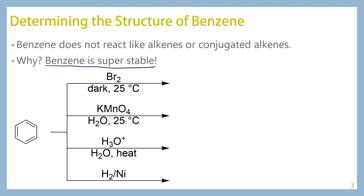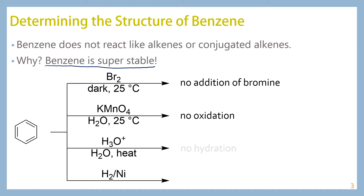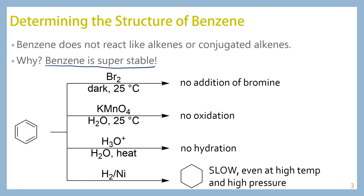If you take benzene and react it with bromine in the dark at 25 degrees, you find that no addition of bromine occurs — not what you'd expect with an alkene. If you react benzene with potassium permanganate in water at 25 degrees, you get no oxidation. In aqueous acid even with heat, there are no hydration reactions. And if you react benzene with hydrogen and nickel, nothing typically happens, but at very high temperature and pressure you will eventually get some cyclohexane — though this reaction is very unfavorable.